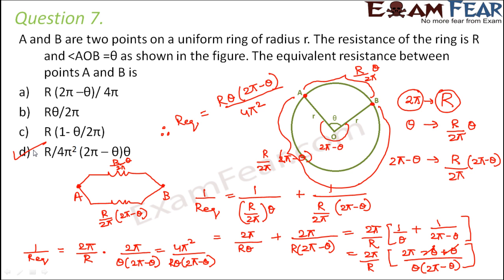A common mistake here is that when you see 'equivalent resistance between A and B,' you only think of one arc. But you need to calculate the resistance of both arcs and then find the equivalent resistance of the two in parallel.